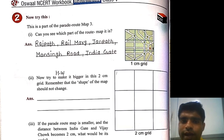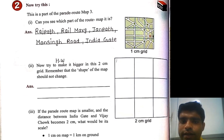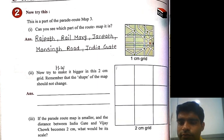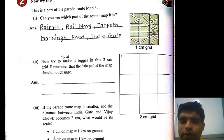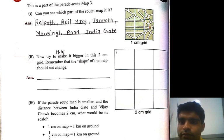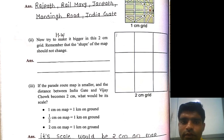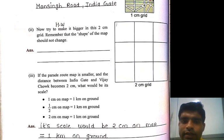Now try to make it bigger on the two centimeter grid. Remember that the shape of the map should not be changed. A one centimeter grid is already drawn — using it, we have to redraw on the two centimeter grid. Do not change the shape when drawing on the new grid.